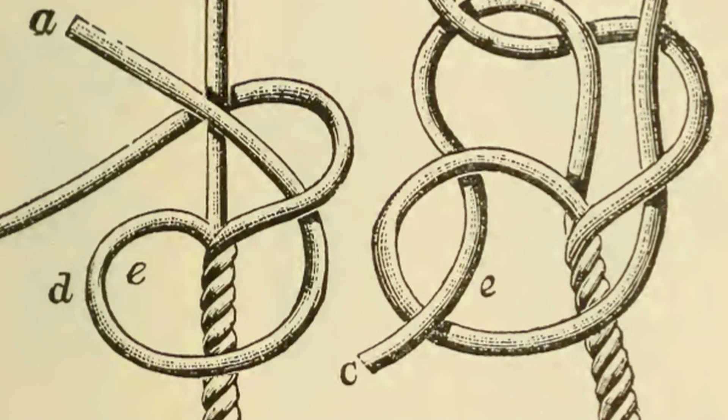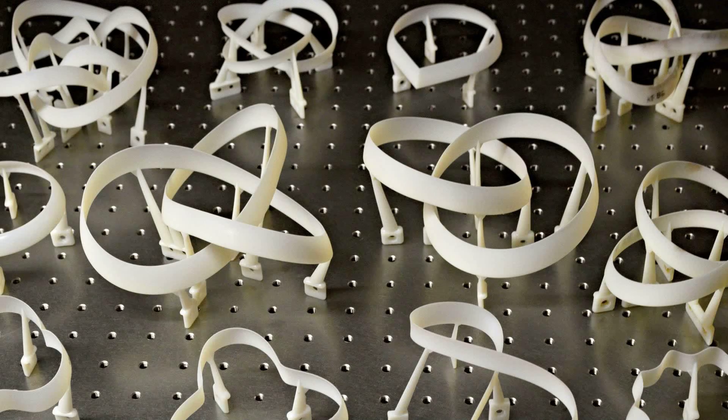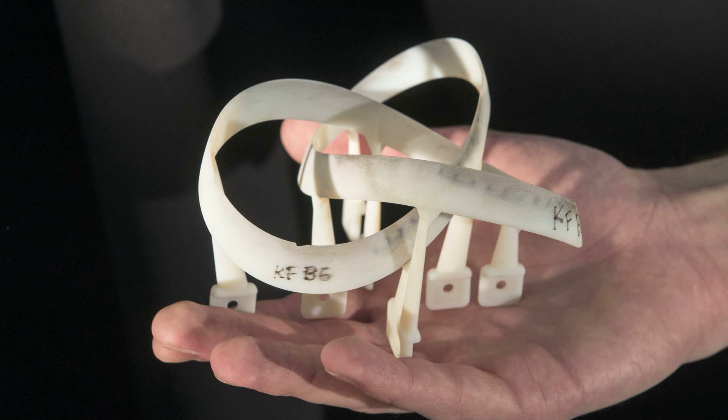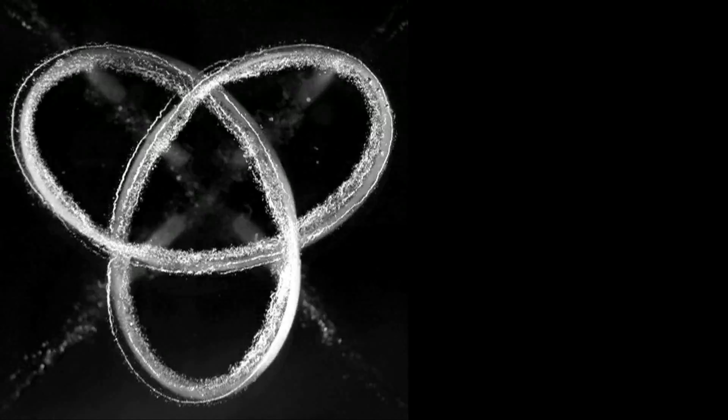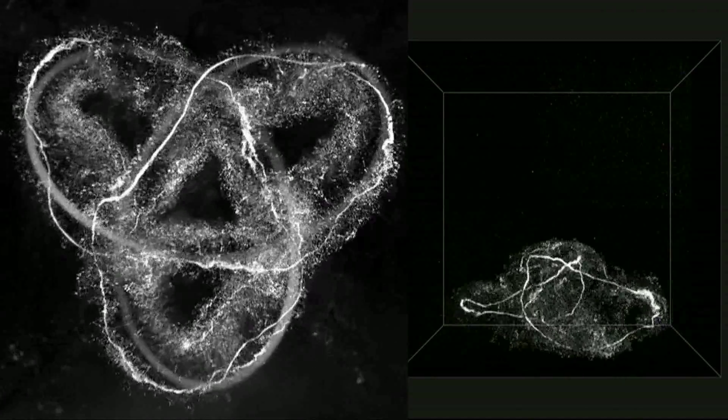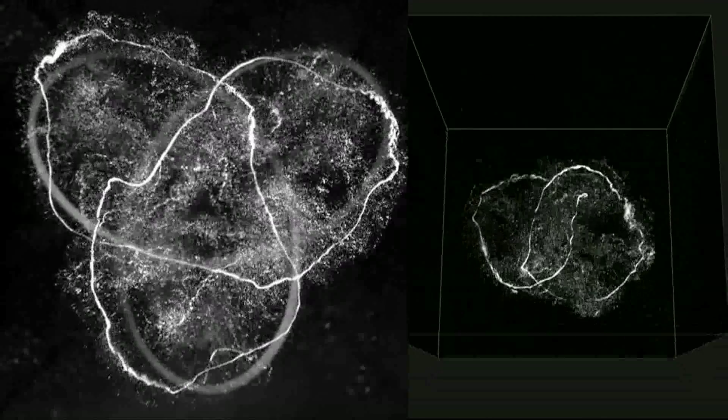The secret to making fluid knots are these 3D printed wings, whose path more or less just traces this knot. Using these, the researchers report in Nature Physics, they were able to make two different types of fluid knots. And here's the question: Does a knotty fluid stay knotted?